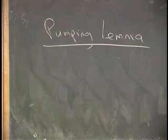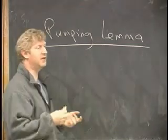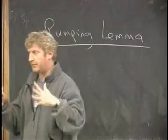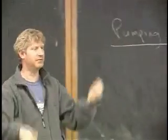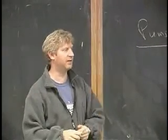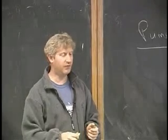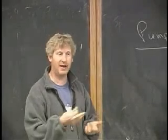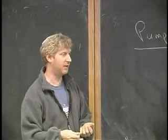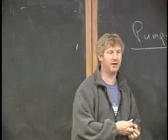And the way it works is, it turns out that if you have a set that is accepted by a finite state machine, that it has a certain property. It can be pumped up somehow. We'll be very specific about what that means in a minute. Therefore, if you can show that a set does not have that property, that pumping property, then it couldn't possibly have come from a finite state machine.